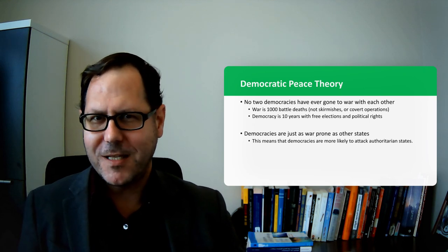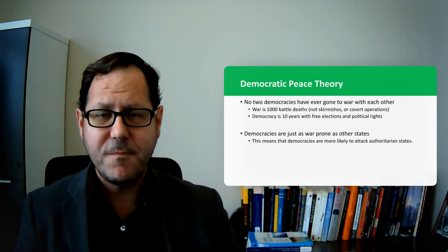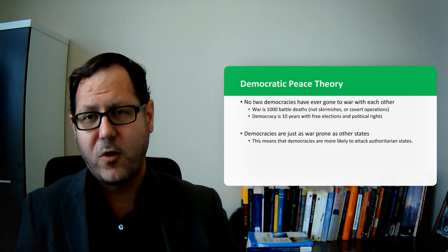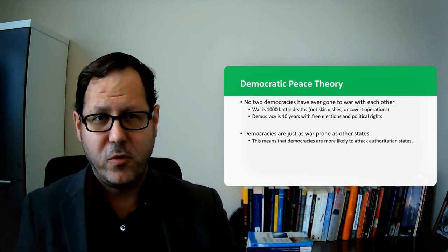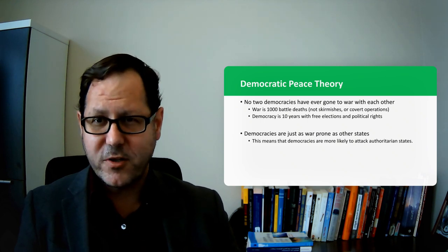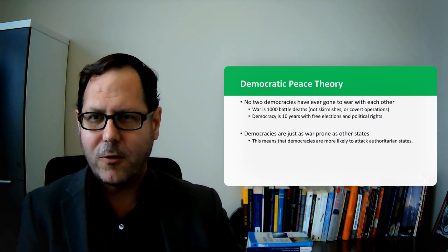Which is oftentimes 10,000 battle deaths over a fairly short period of time. So we're ruling out one-off skirmishes at a border, we're ruling out covert operations, we're ruling out sanctions or other kinds of coercive action in the international system, blockades. Those and battle deaths gets you on our list of wars.